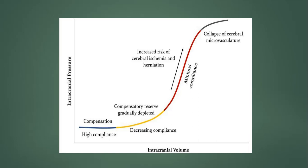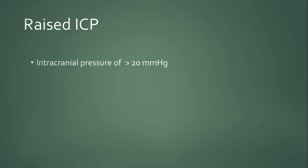The ICP versus intracranial volume curve shows that intracranial volume can increase while ICP is still initially maintained. Once compliance decreases, there is a sudden sharp rise in intracranial pressure, increasing the risk of cerebral ischemia and herniation. In the final stage, there is complete collapse of the cerebral microvasculature, causing brain death.